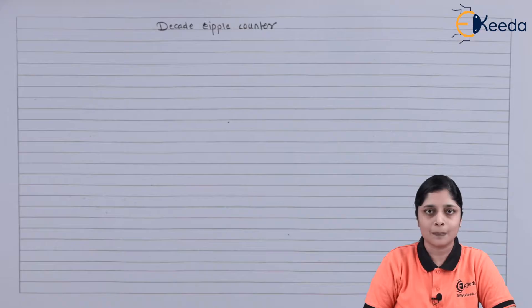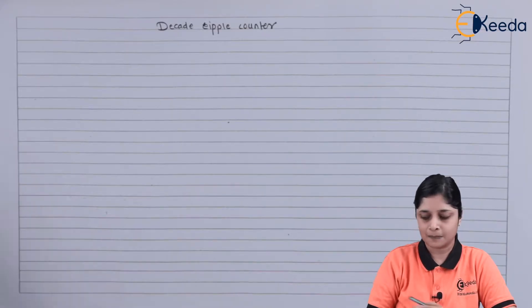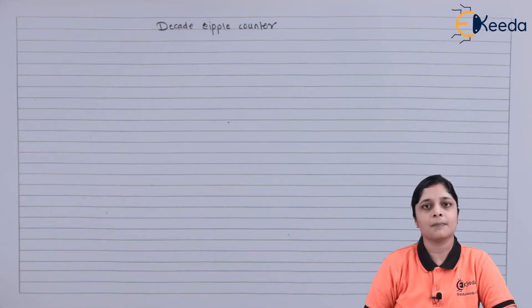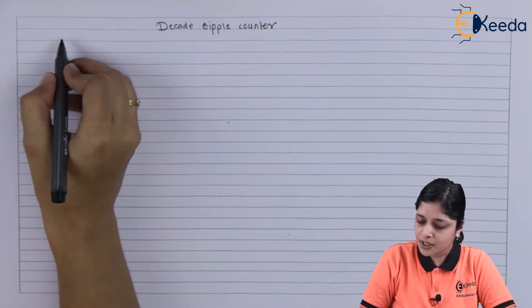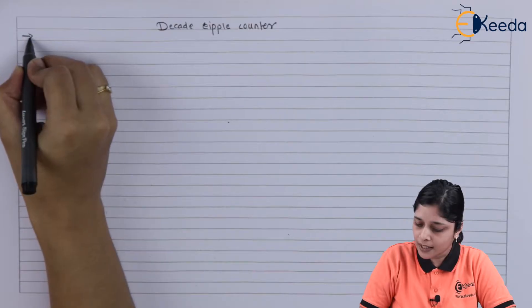it should stop. You can say in other words mod 10 counter, or also you can say BCD counter. So maximum number of states you can achieve here is 10.